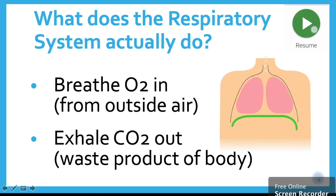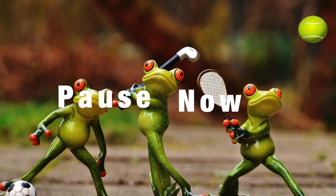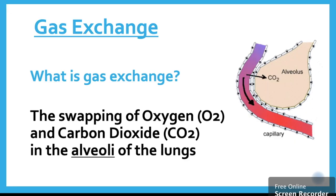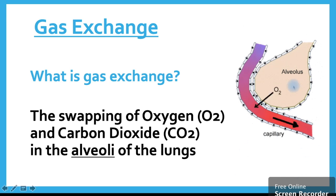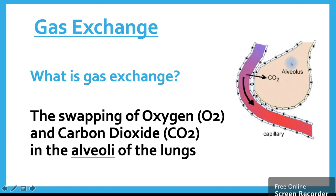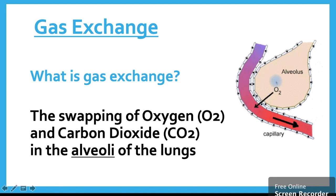Pause this video and breathe in as big as you can, and notice what happens to your chest and tummy. Then breathe out as deep as you can. The process we just talked about is actually called gas exchange, which is the swapping of oxygen and carbon dioxide in the alveoli of the lungs. This diagram shows air coming in through our mouth all the way down to our alveoli and into our bloodstream, and carbon dioxide coming from our bloodstream back into our alveoli to be breathed out.